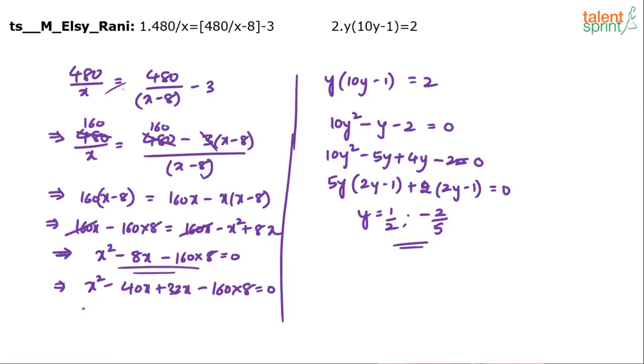So x of x minus 40 plus 32 into x minus 40. So what are the values of x? x will be equal to 40 or minus 32. 40 or minus 32.